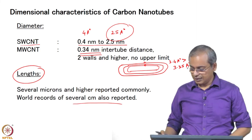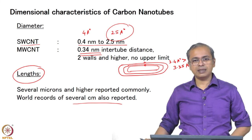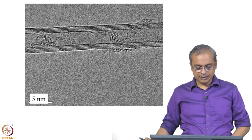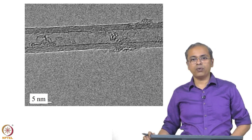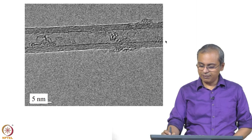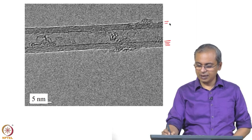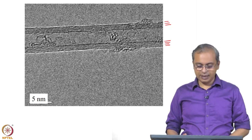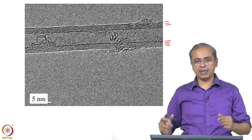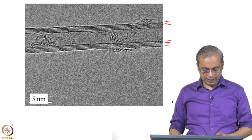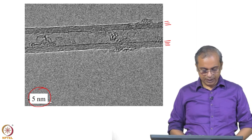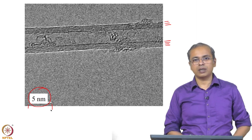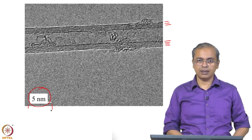We will look at carbon nanotubes in greater detail in subsequent classes. In the magnified view you can see various layers — a layer-by-layer structure showing the concentric tubes around each other. This distance shown is about 5 nanometers, which is what you see on the image.